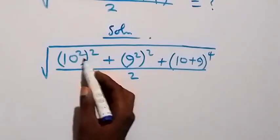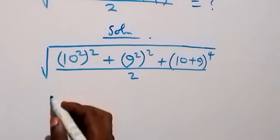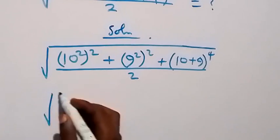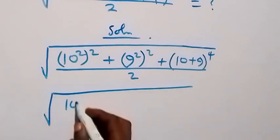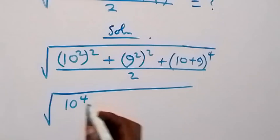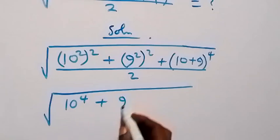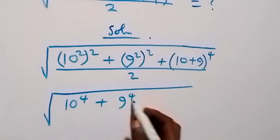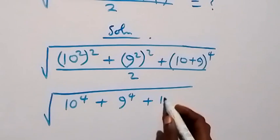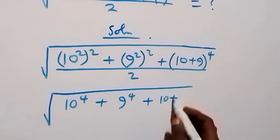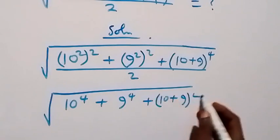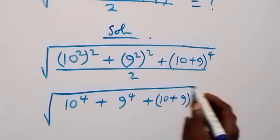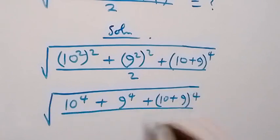Then when we apply the law of indices here, this power we multiply, and this becomes square root of: here we have 10 raised to power 4, plus here we have 9 raised to power 4, then plus (10 plus 9) all raised to power 4, then divided by 2.